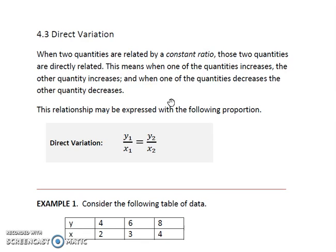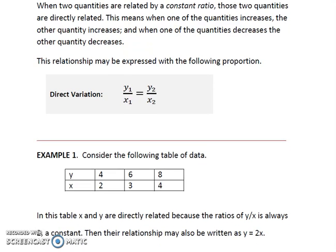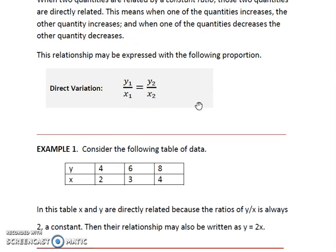This relationship may be expressed with the following proportion, and quite possibly more easily understood by the following example. Here we have a table of data with values given for y and x. In this table, x and y are directly related because the ratio of y over x is a constant. In this case, it's 2.